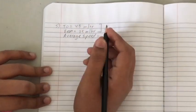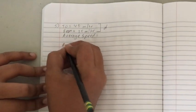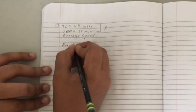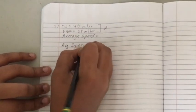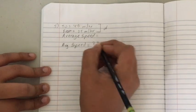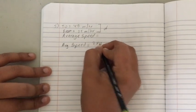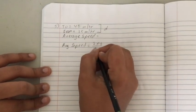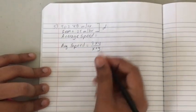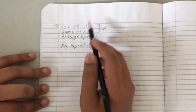The formula for the average speed is, it is 2 times x times y by x plus y, where x and y are the two speeds.